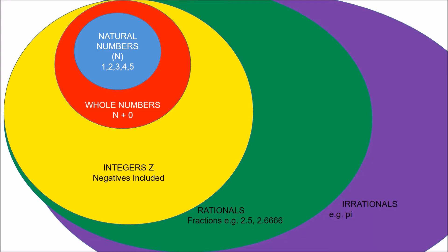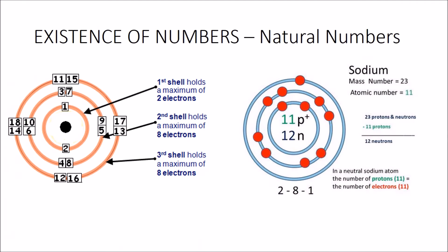Last but not least, we have the irrationals. This includes all the previous numbers plus numbers such as pi, for example. Pi is related to the circumference of a circle. Now that we know what these numbers are, take a moment to digest them. We're going to look at the inherent existence of these numbers. The first thing we'll look at is natural numbers.